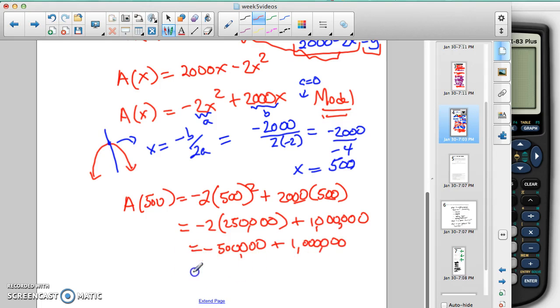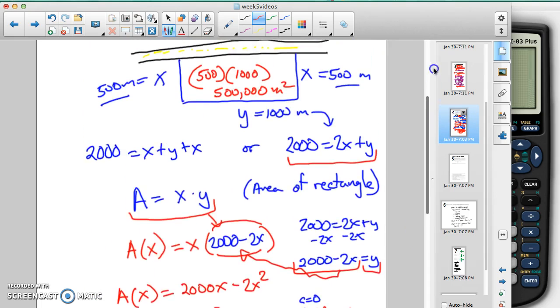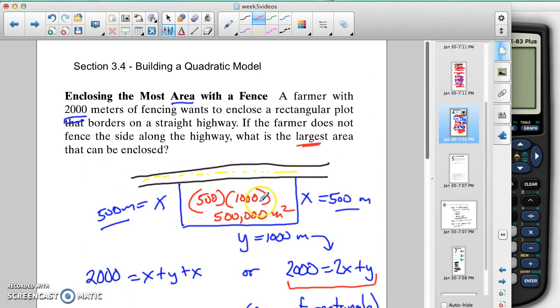And that's going to give us the actual 500,000 that we had before up above, and that's in meters squared. So either way, doing the function or using the area up here, length times width, we get the largest area. Thank you.